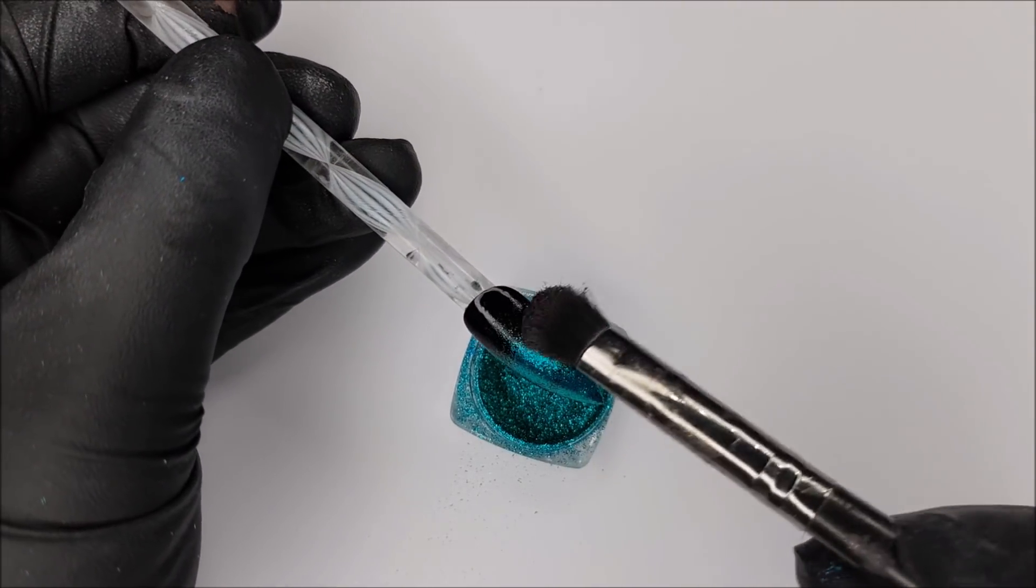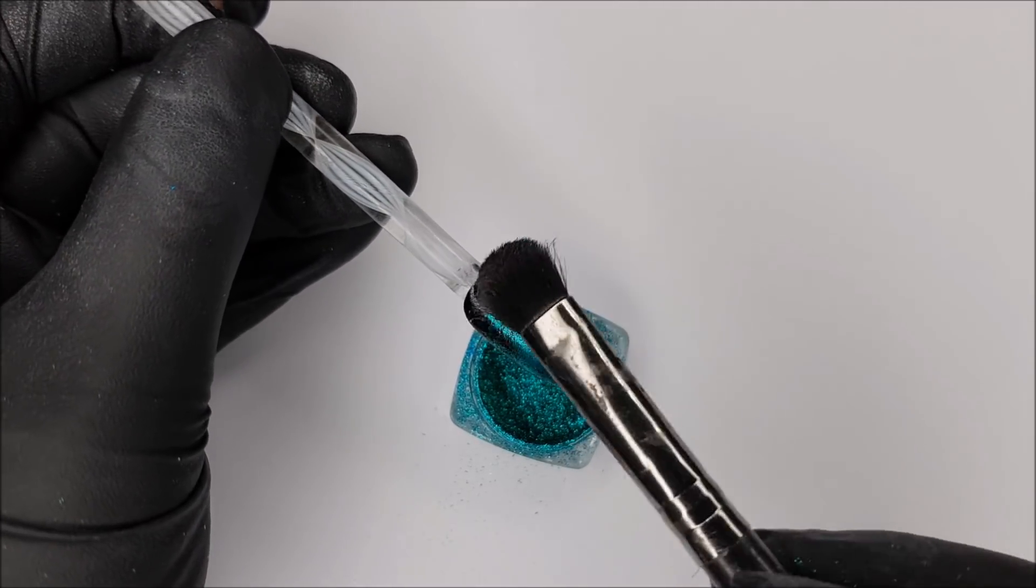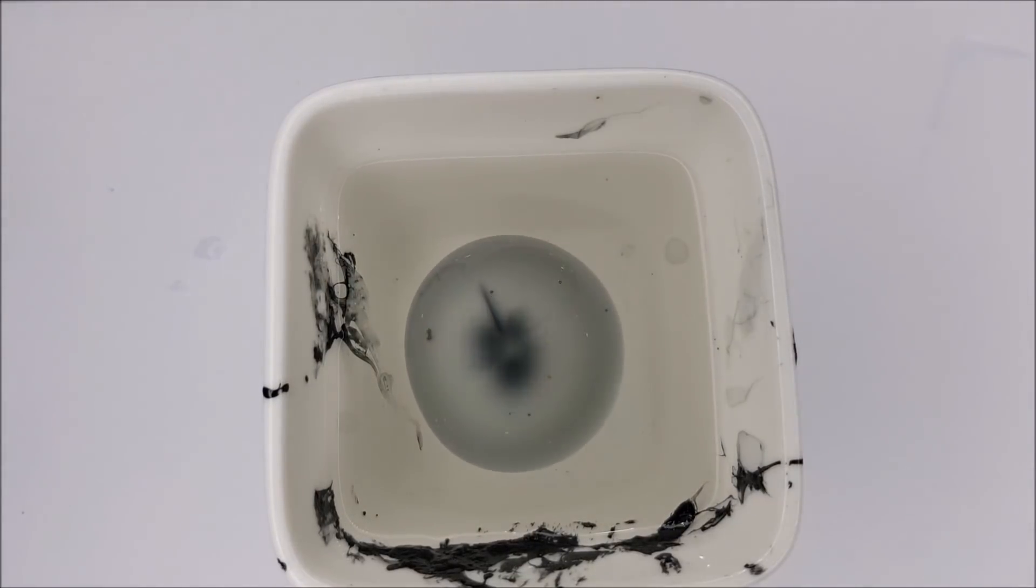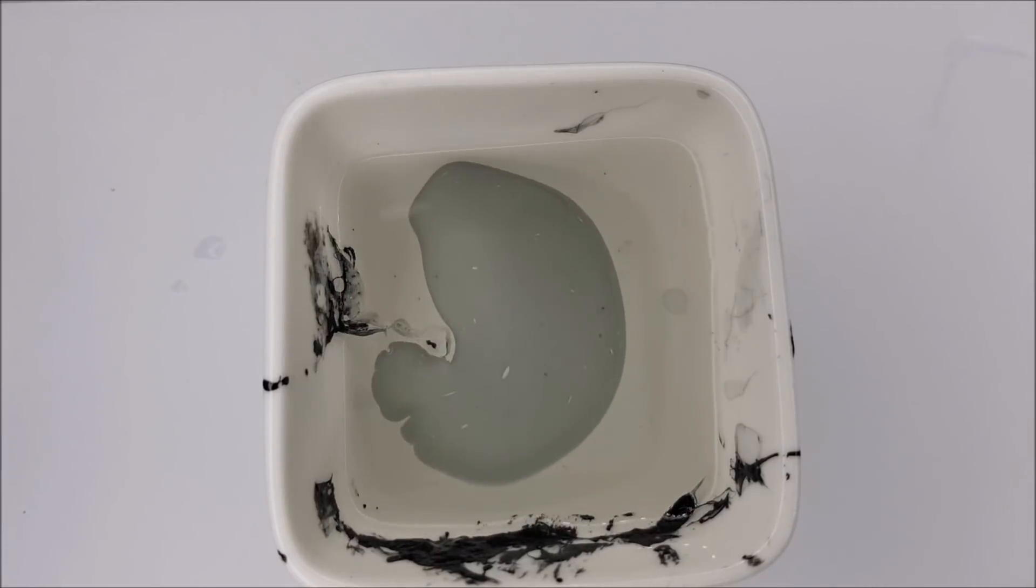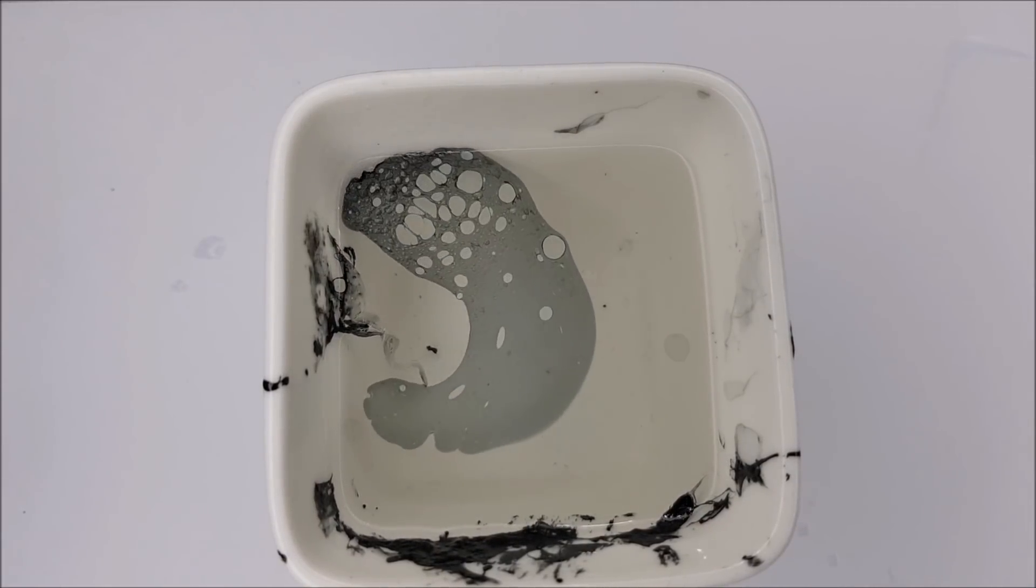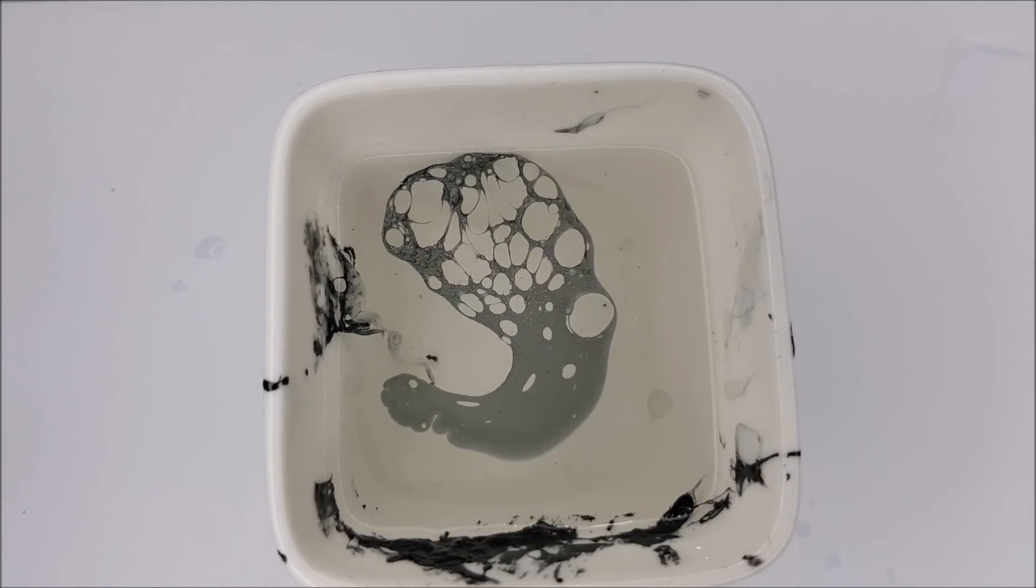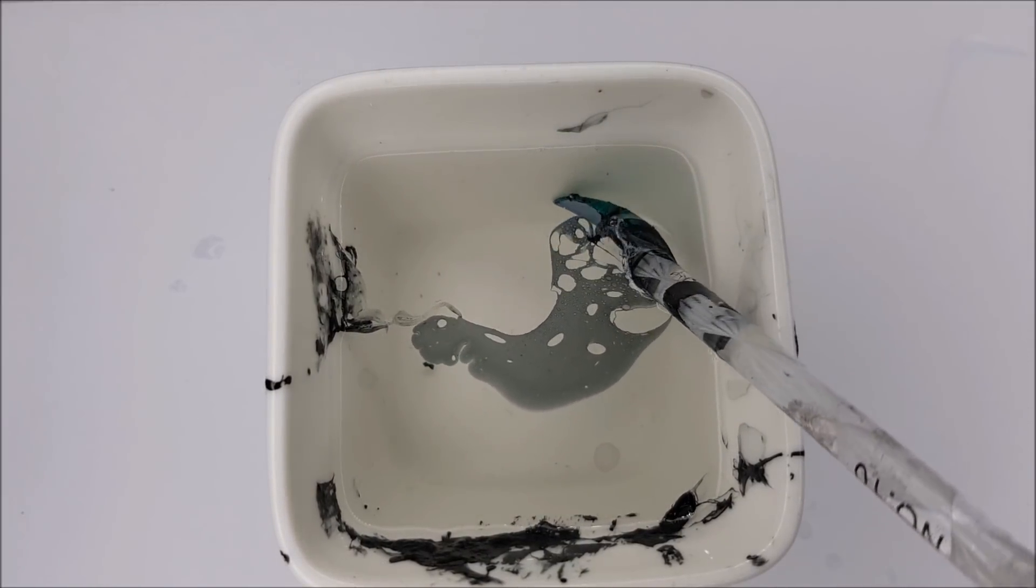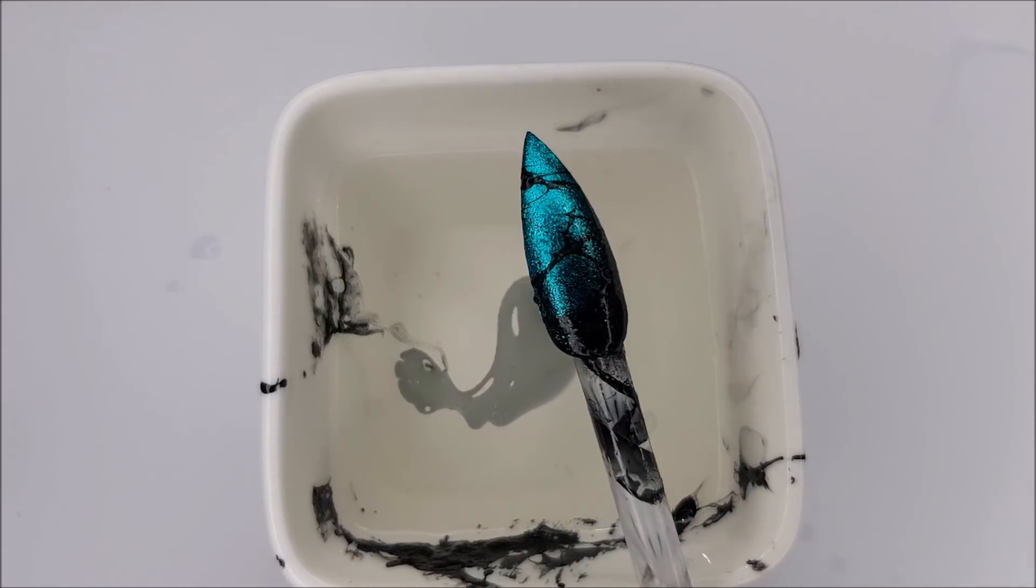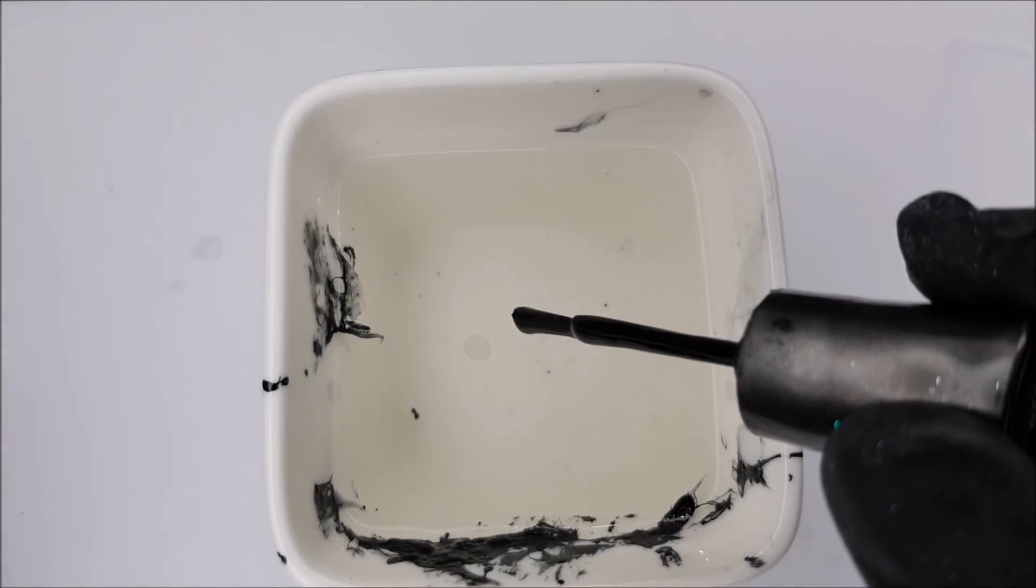We're going in with our water marbling again, but this time I'm going to use my alcohol to spray a finer mist into the polish. This will break up the polish into smaller cells, I guess you can say, and it creates a slightly different look.